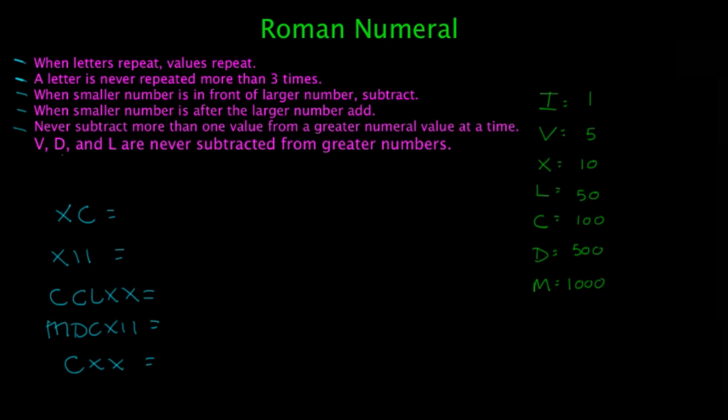All right. So you have the smaller value that's in front of the larger value. So you're going to subtract them. So you're going to have 10 subtract 100, and this is going to equal 90. For XII, you have the I, I afterwards. So that's going to be addition. So you're going to have 10, plus 1, plus 1. That's going to give you 12.